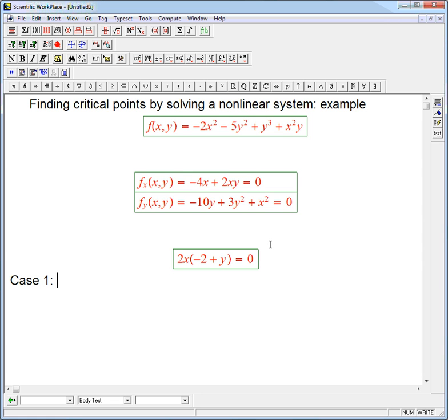Case 1 is where x equals 0. This is very common. We're going to get kind of a tree of cases. The one equation we focused on first breaks up into two cases. Given that x equals 0, we've used up that equation for right now, and we want to look at what the other equation says.